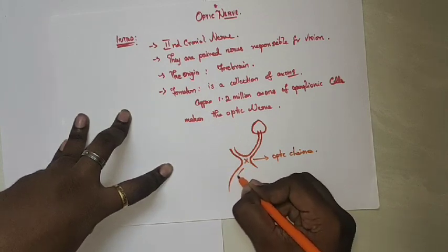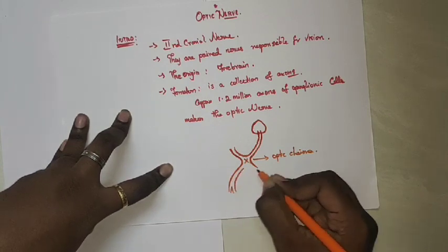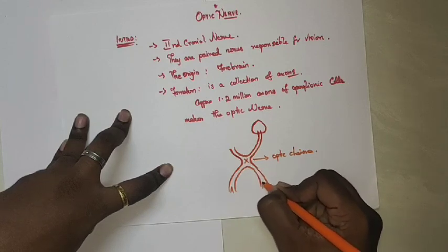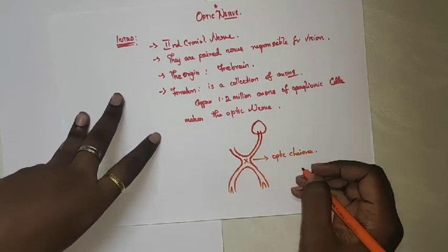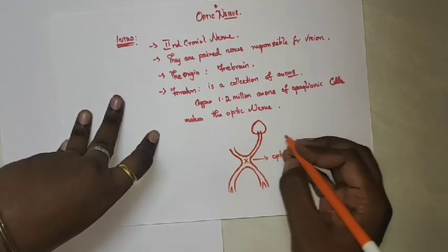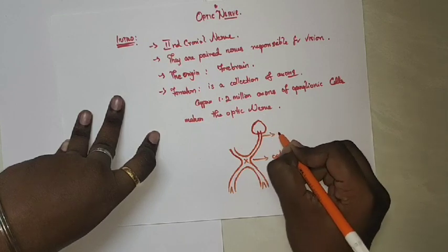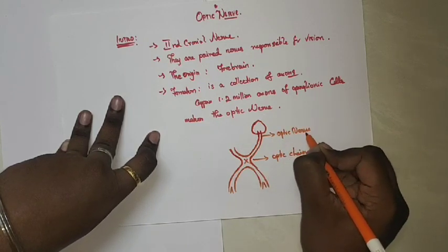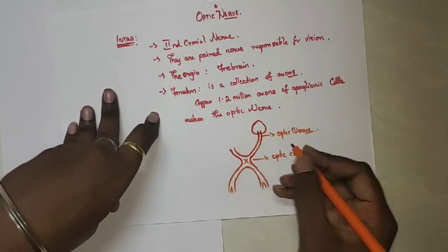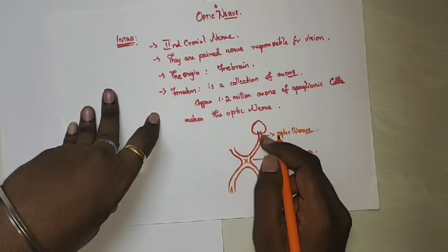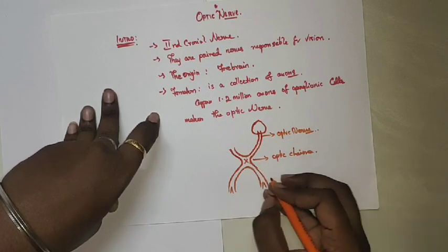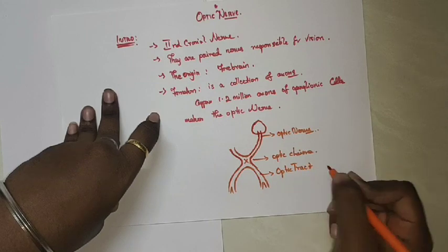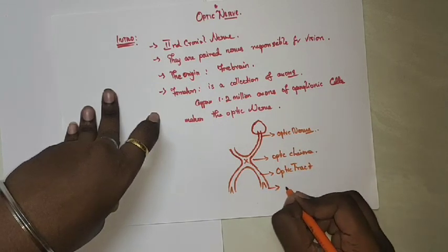Then it gets radiated into the forebrain. So we have four parts of the optic nerve: the optic nerve itself, the optic chiasma, the optic tract, and the optic radiation.